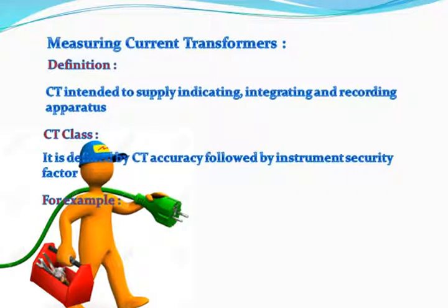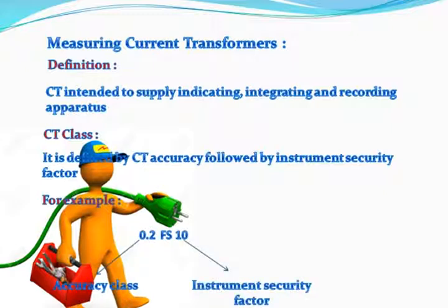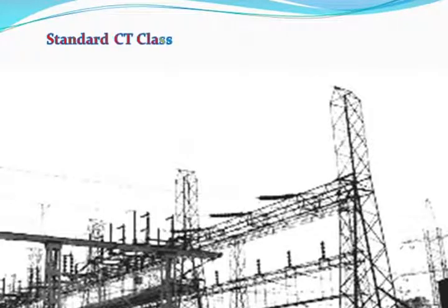For example, consider 0.2 FS10, where 0.2 is the accuracy class and 10 is the instrument security factor. 0.2 FS10 is a special purpose measuring CT. As per IEC, the standard classes of CT are 0.1, 0.2, 0.2S, 0.5, 0.5S, 1, and 3.